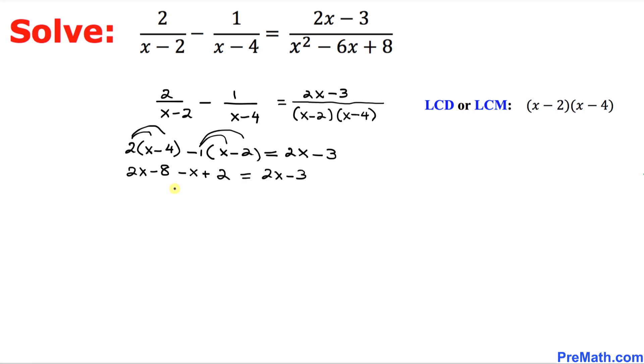Now, let's combine the like terms. 2x minus 1x and then negative 8 plus 2 is going to make negative 6 equals to 2x minus 3.